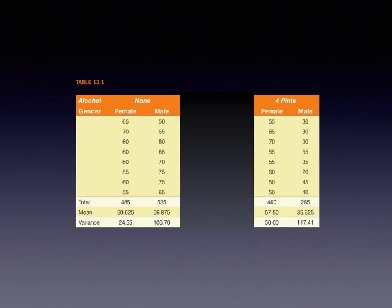There's one dependent variable here and two independent variables. Even though we're not manipulating whether somebody is male or female, we're still going to use the same statistics as though it were completely independent of any other factor. So we have one factor with two levels — male and female — and a second factor that is also an independent groups variable: how much alcohol were they drinking? None or four pints.